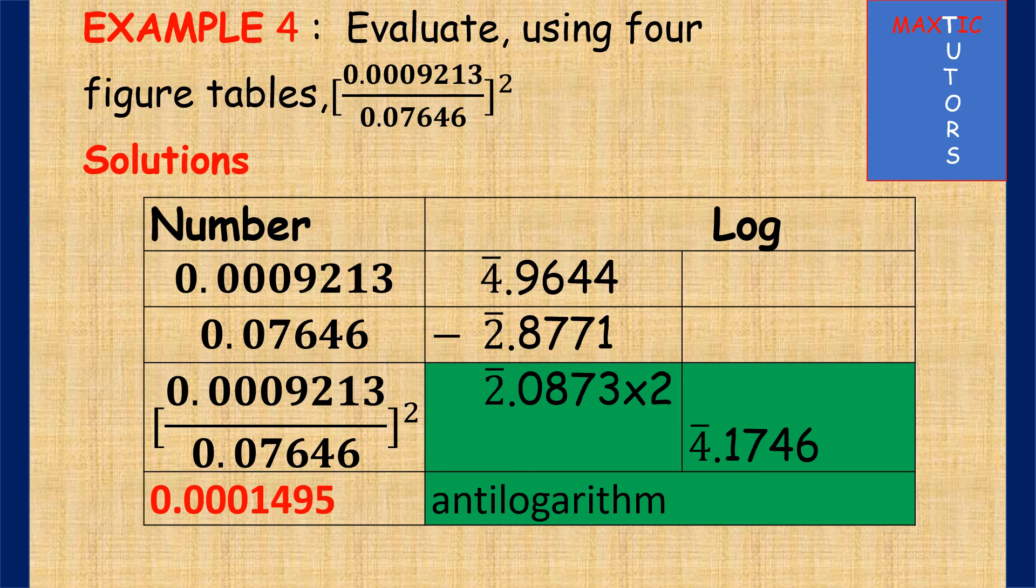So by the time you subtract, it will be 4 minus 1 is 3. You borrow 1 from here to here, this makes it 14 here. 7 from 14 is 7. This remains 5 which is 15. 7 from 15 is 8. This remains 8, so 8 minus 8 is 0. Then when you come here, this becomes minus 4 minus minus 2, and this minus and this minus will become plus. So it will be minus 4 plus 2, which is minus 2 or bar 2. Then because of this raised to power 2, we now multiply this number by 2 and it will give you bar 4.1746.